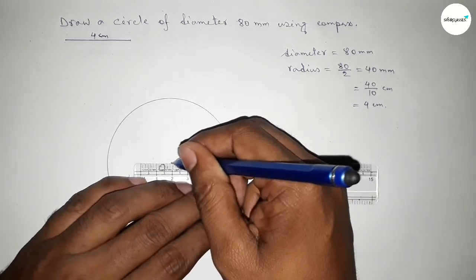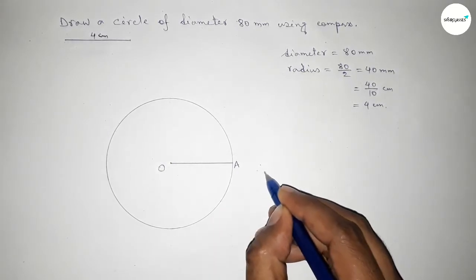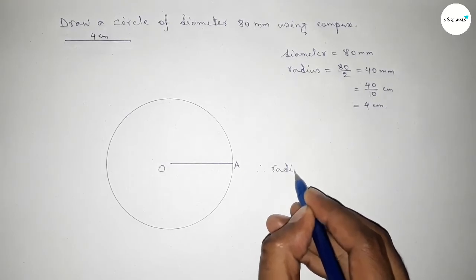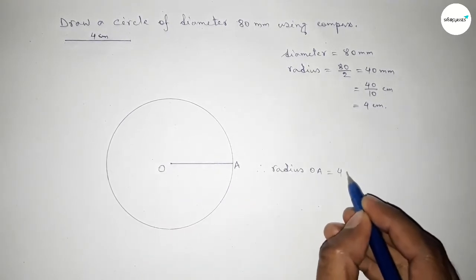Taking here point A. So therefore radius OA equals 4 centimeters.